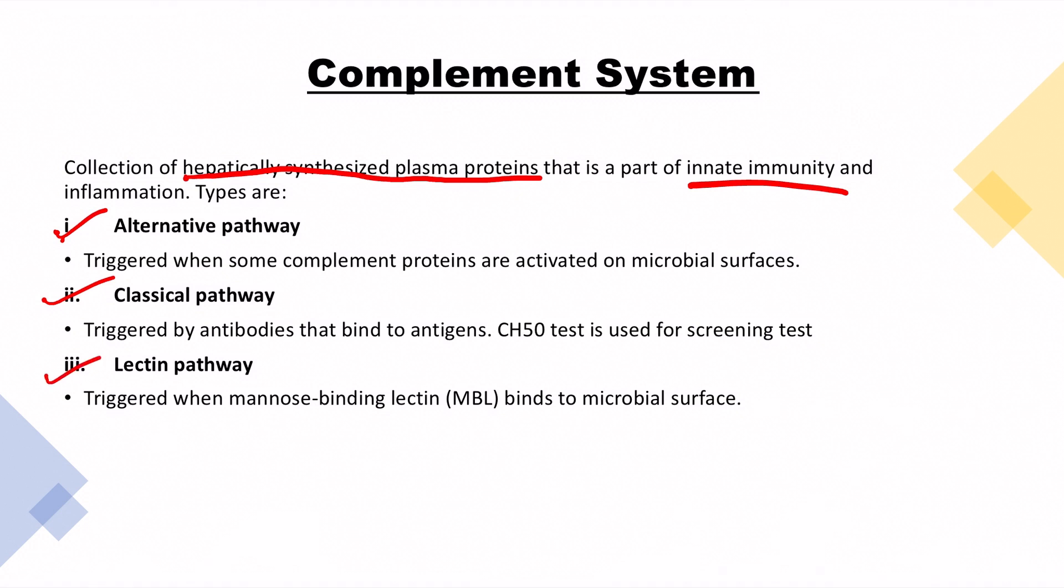Alternative pathway is triggered when some complement proteins are activated on microbial surfaces. Classical pathway is triggered by antibodies, exactly speaking IgG and IgM that bind to the antigens. CH50 test is used as a screening test. Lectin pathway is triggered when mannose binding lectin binds to microbial surface.